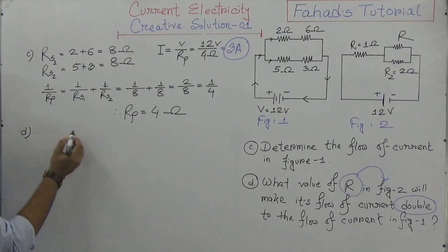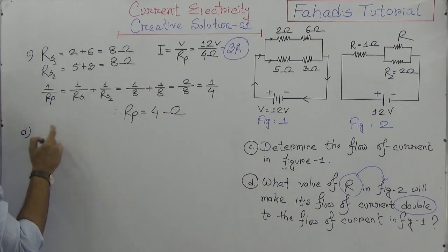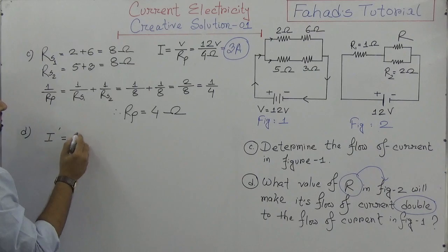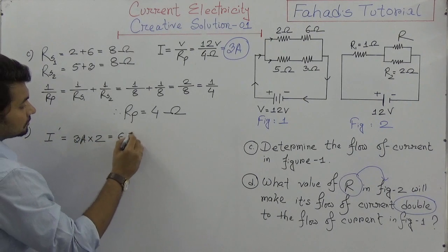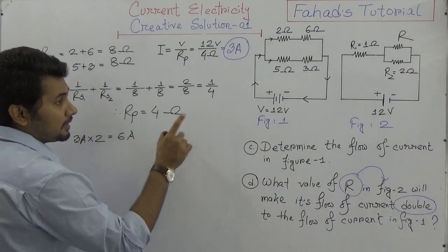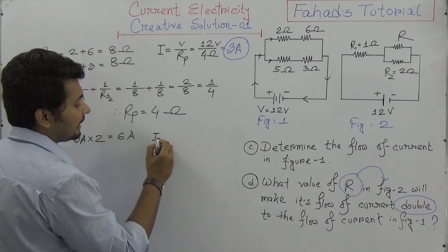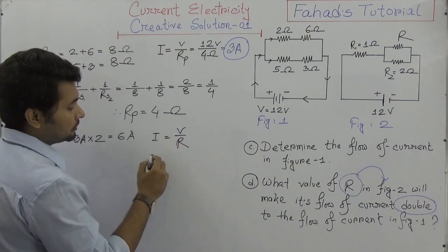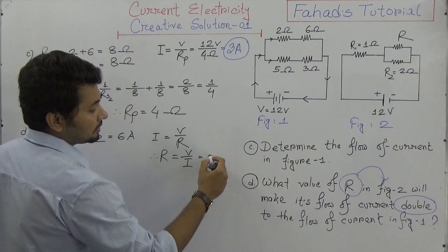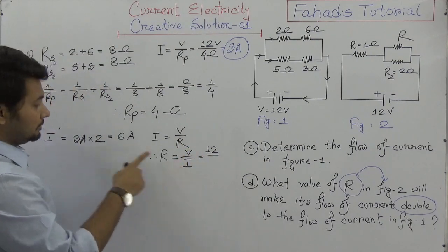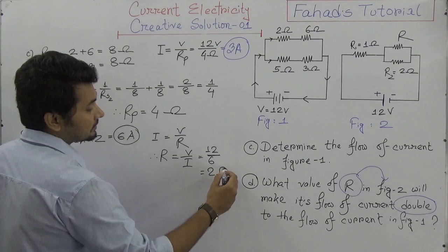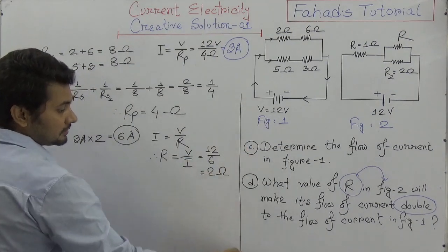We want six amperes. To get six amperes, what should the total resistance be? Using I equals V divided by R, rearranging gives R equals V divided by I. The voltage in figure two is 12 volts and the expected current is six amperes, so the total resistance should be two ohms.